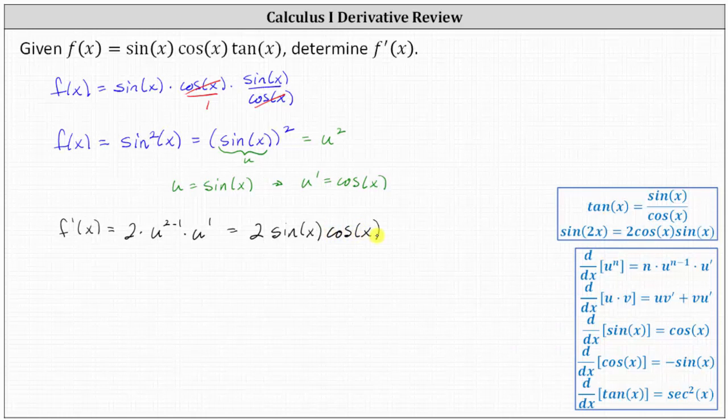This gives f'(x) = 2sin(x)cos(x), which is acceptable for the derivative function. But we can also use the double angle identity for sine: recall 2cos(x)sin(x) = sin(2x), and therefore we can also write f'(x) = sin(2x).